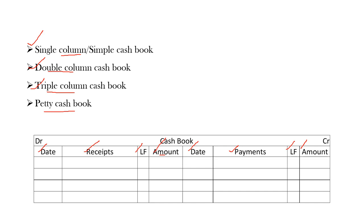Now, how do we record transactions in the cash book? In the debit side, we have used the word receipts. Receipts means whenever money comes into the business, it will be recorded in the debit side. Whenever cash comes into the business, it will be recorded in the debit side. And in the credit side, it is payments — whenever cash goes out of the business, it will be recorded in the credit side.